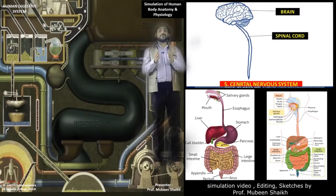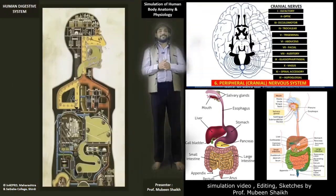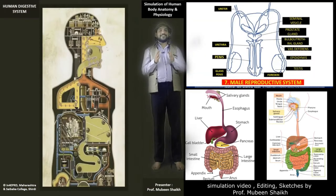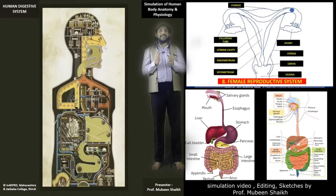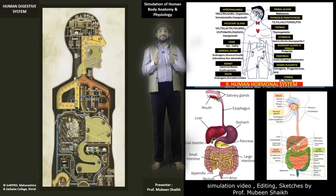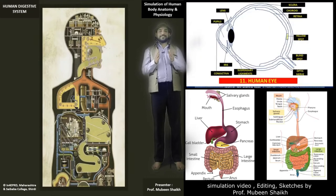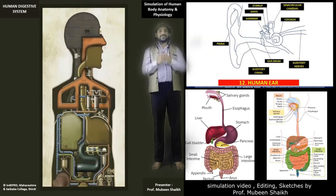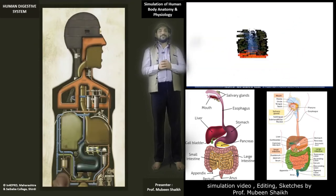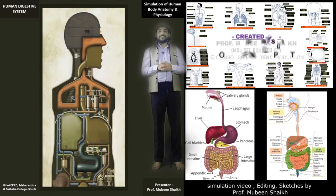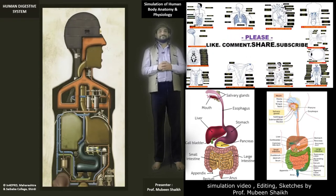Undigested food material gets expelled out of the body via the large intestine and anus. This is how our body works — that's all about the machine genetic simulation of the human body system. Thanks a lot! If you like this video, please like, share and subscribe to my channel. See you soon!